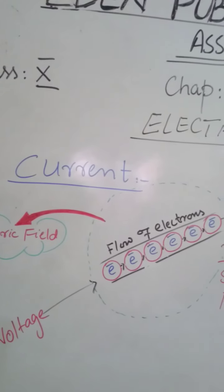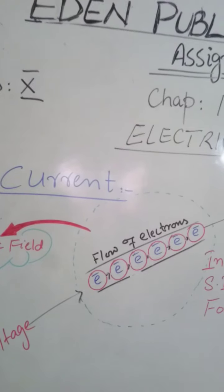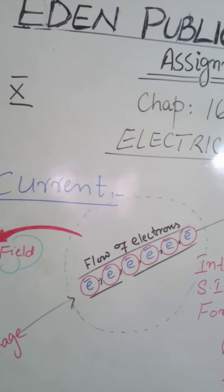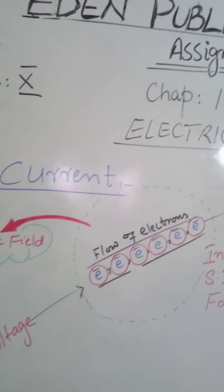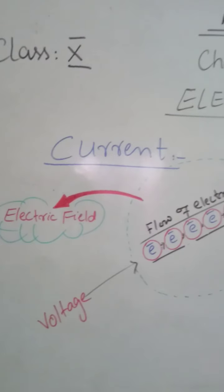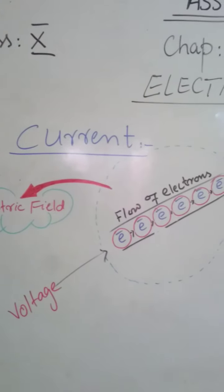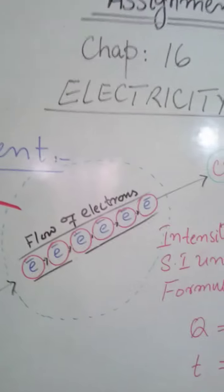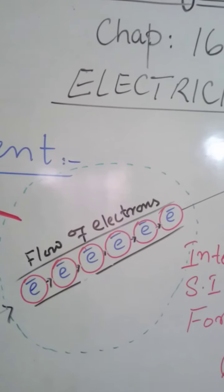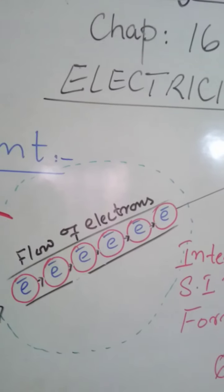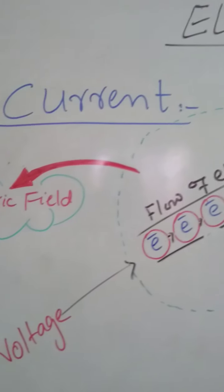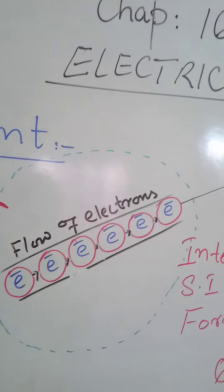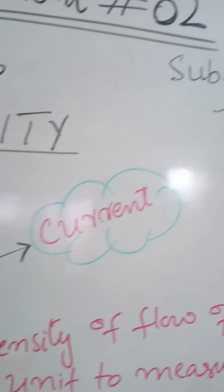Now let's see what is electric current. Every matter contains free electrons that need pressure to flow — that is called voltage. When voltage is applied to any conductor, such as an electrical wire, electrons start to flow. This flow of electrons is actually called current.